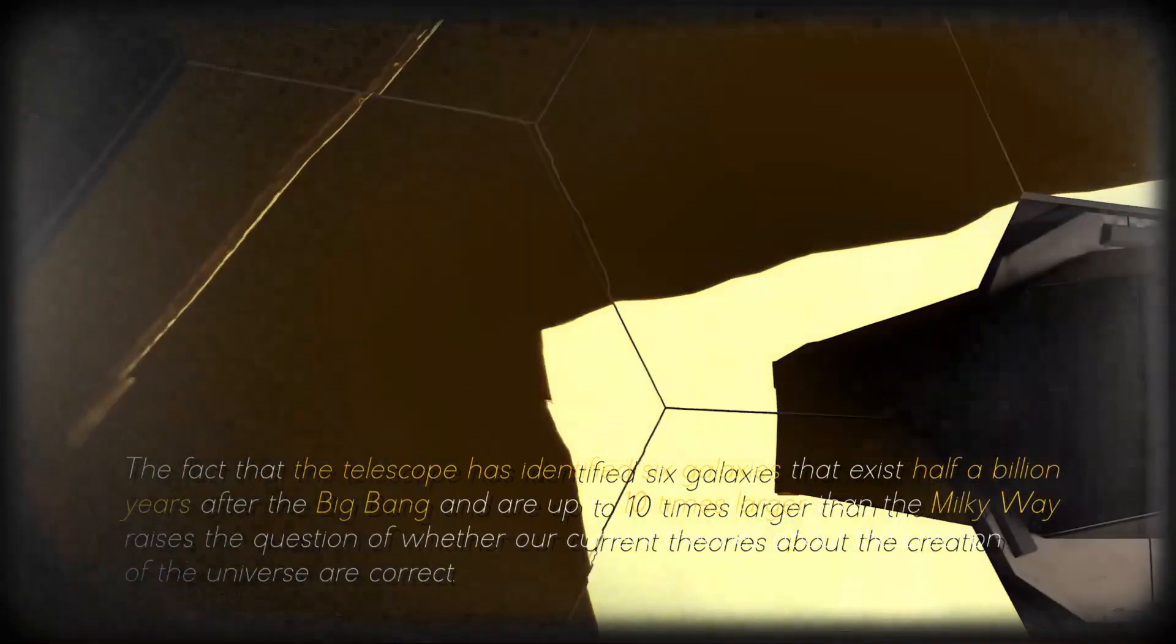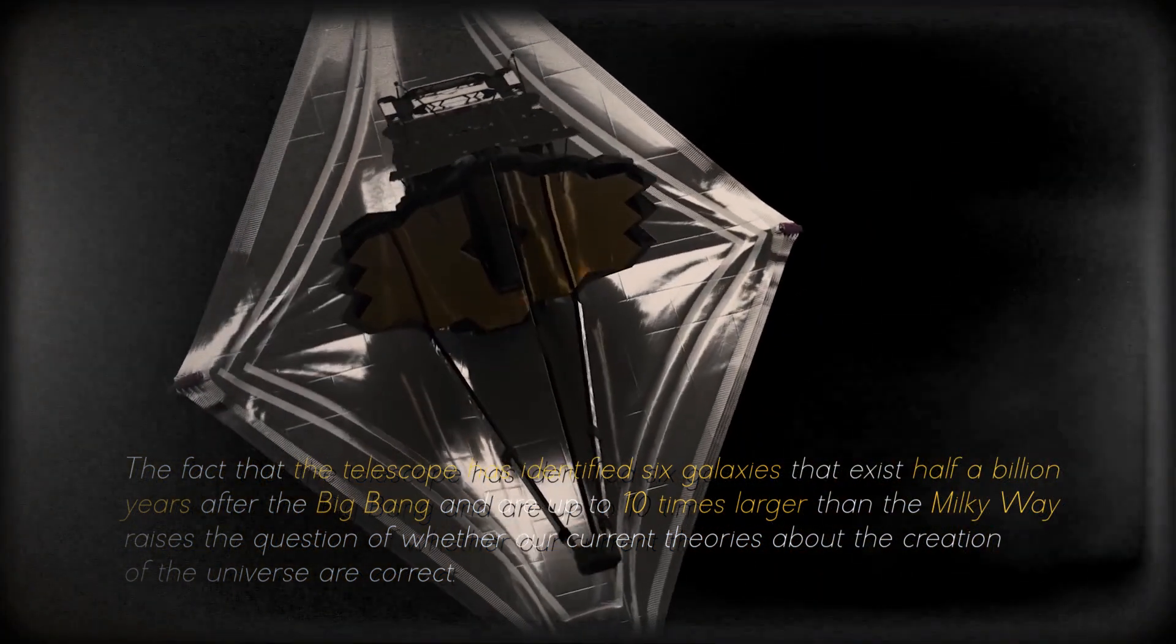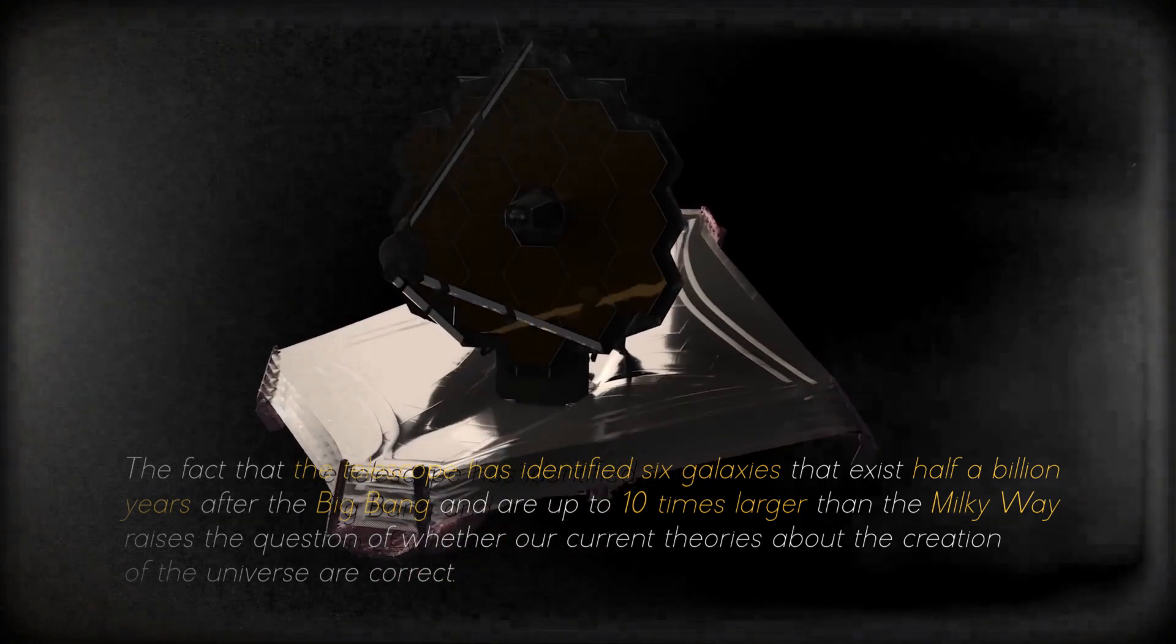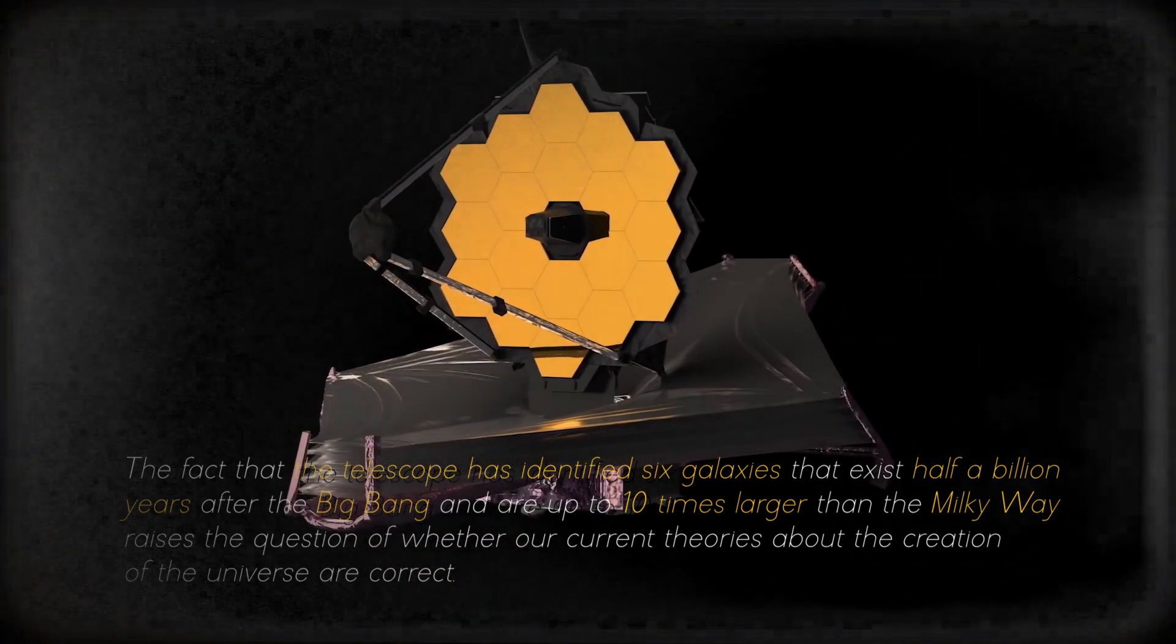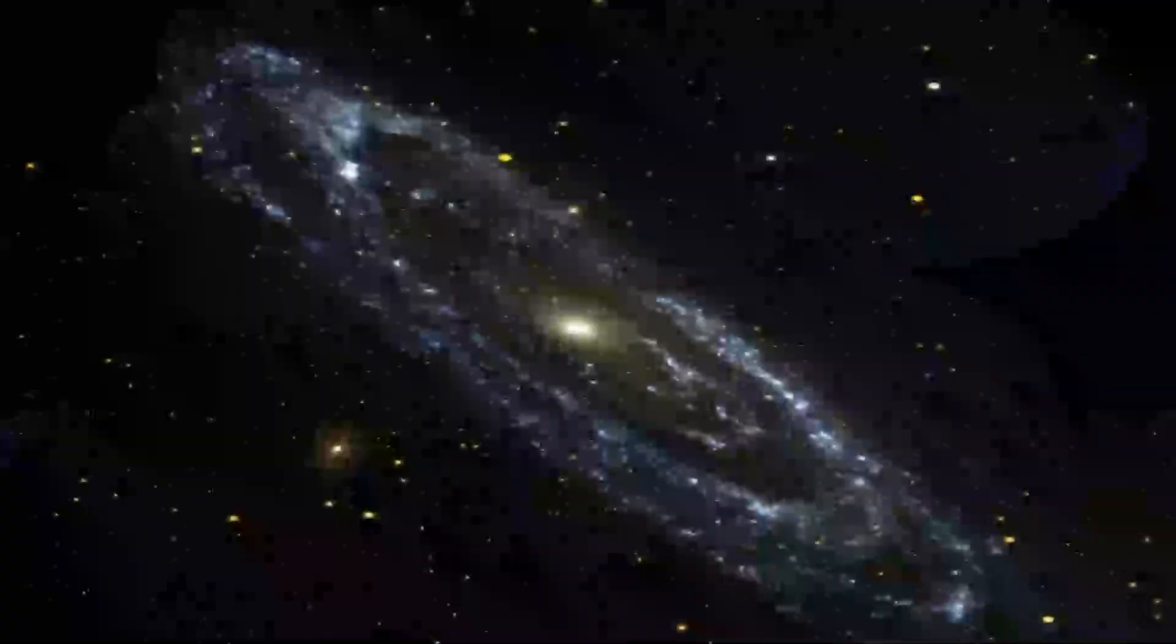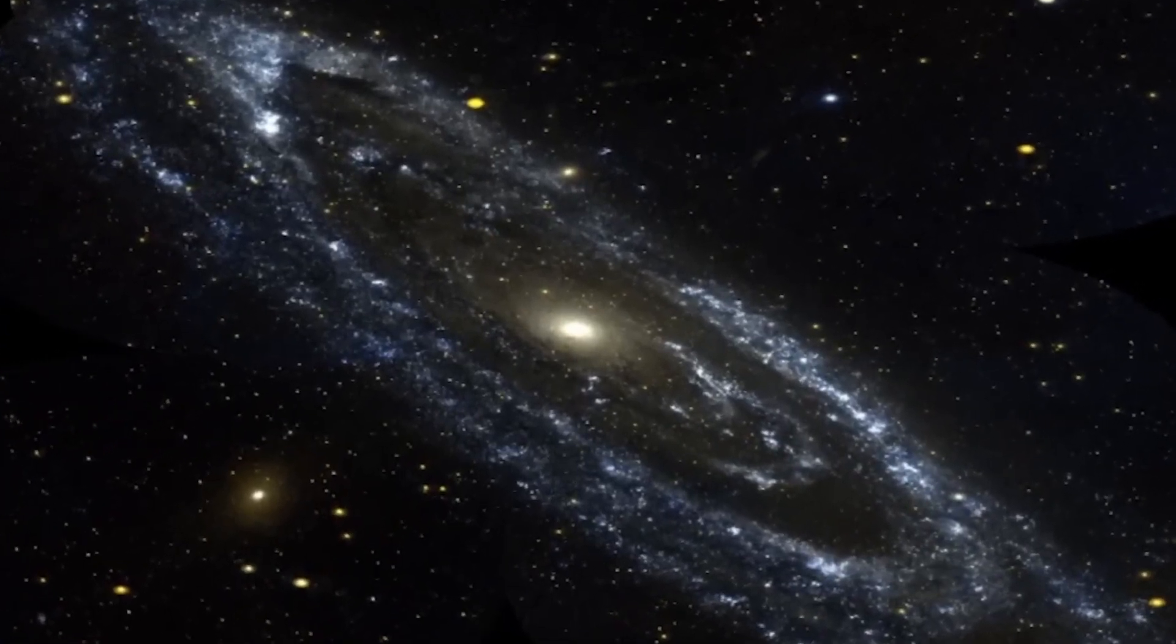The fact that the telescope has identified six galaxies that exist half a billion years after the Big Bang and are up to ten times larger than the Milky Way raises the question of whether our current theories about the creation of the universe are correct. Kaku explained that it takes billions of years to create a galaxy like the Milky Way, so it is strange to find such large, young, primordial galaxies. This discovery may require us to revise and rewrite textbooks on the beginning of the universe.